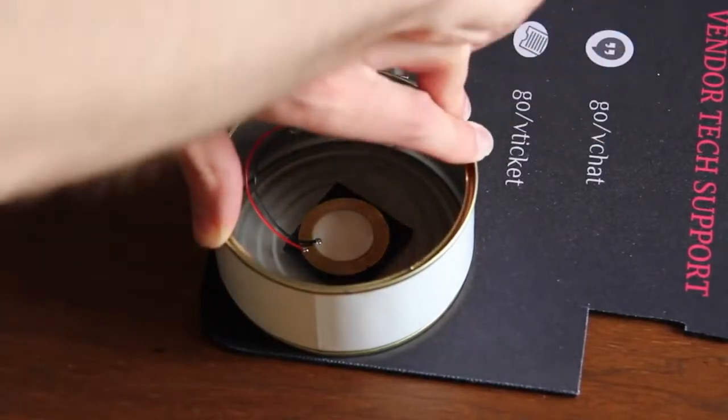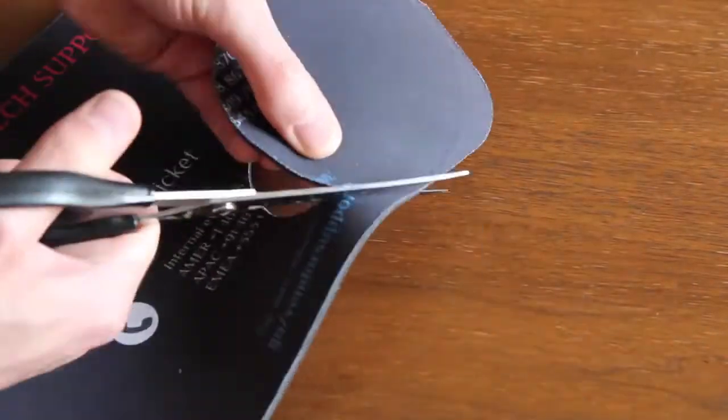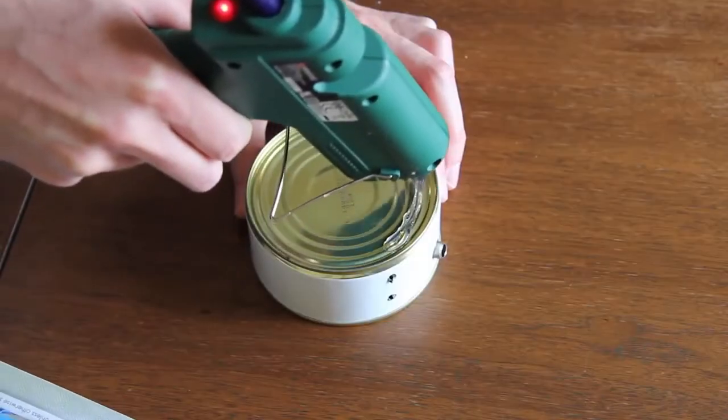Use the form of the can to mark the circle on the rubber mouse pad. Cut it out and use hot glue again to attach it to the can.